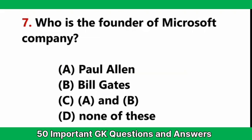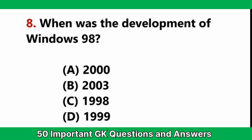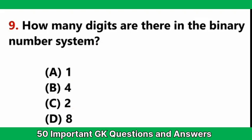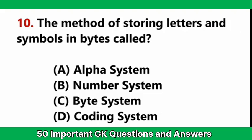Who is the founder of Microsoft company? — Answer C: both Paul Allen and Bill Gates. When was the development of Windows 98? — Answer C: 1998. How many digits are there in the binary number system? — Answer C: 2. The method of storing letters and symbols in bytes is called — Answer D: coding system.